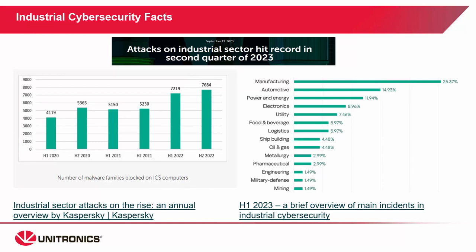Starting with some industrial cybersecurity facts. About one-third of global cybersecurity attacks are targeting the industrial sector. The graph to the right shows a breakdown by sector — a lot of it is coming from the manufacturing and energy industries. These are some of the main targets because they bring the largest potential value to the attacker. According to Kaspersky annual reports, these attacks are growing exponentially year over year, as you can see in the chart to the left. We can expect these attacks to continue growing in the years to come.